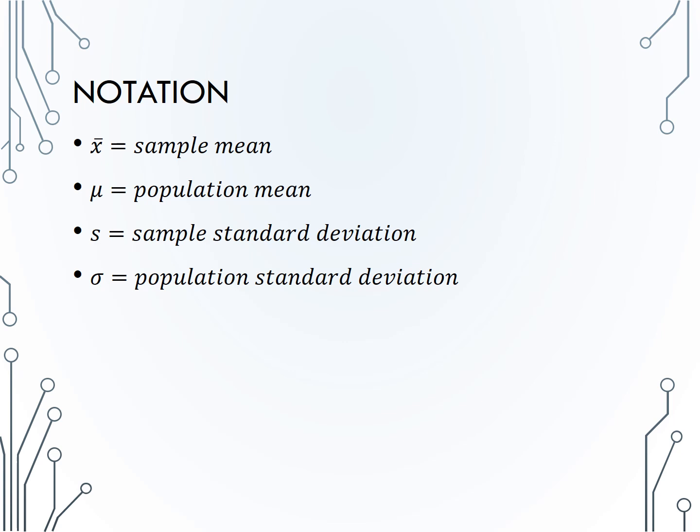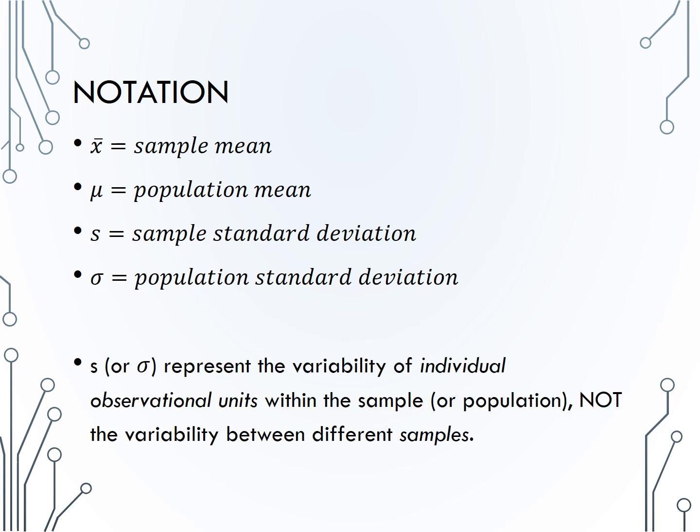Be very careful. s is the sample standard deviation and is therefore telling us about the spread or variability of individuals in the sample. Similarly, sigma gives the variability of individuals in a population. Neither of these values measure sampling variability, or the variability between different samples.